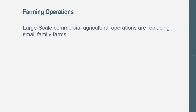Farming operations: large-scale commercial agricultural operations are replacing small family farms. 100 years ago you would see more small family farms and less large-scale farms than you would now. Today you would see more large-scale farms and less small family farms. Why has this occurred?